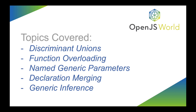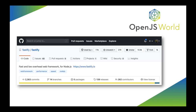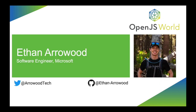Welcome back — I hope you enjoyed the code walkthrough. As a reminder, the topics we covered today include discriminant unions, function overloading, named generic parameters, declaration merging, and generic inference. All of these are actively in use in the actual Fastify type definitions, and there's plenty more information available on TypeScript's documentation. If you'd like to learn more about the type definitions or about Fastify itself, come check us out on GitHub — we're always accepting new contributors. My name is Ethan Arrowood, a software engineer at Microsoft. Thank you very much for listening, and you can find me on Twitter and GitHub to chat further about TypeScript, Fastify, or Node.js.